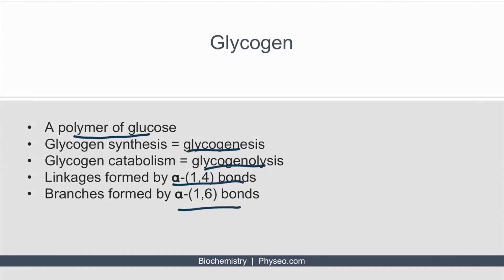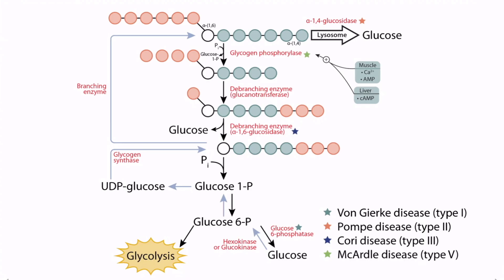Let's pull up an image so you can see what I'm talking about. This is a detailed figure of glycogen metabolism, which can be found in Section 7 of Metabolism. The alpha-1,4 linkages can be seen right here — notice that these bonds link glucose molecules together in a relatively linear pattern. The alpha-1,6 linkages, which can be seen right here, link glucose molecules together in a branched pattern.